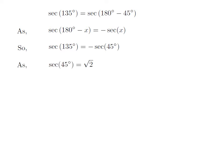We know the value of secant of 45 degree is equal to square root of 2. So, value of secant of 135 degree is equal to minus square root of 2.